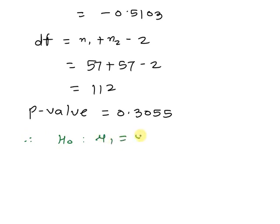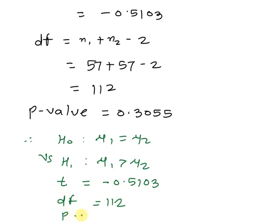Therefore we have the null hypothesis H0: μ1 equals μ2 against the alternative hypothesis H1: μ1 is greater than μ2. Then test statistic t equals minus 0.5103, degrees of freedom equals 112, and corresponding p-value equals 0.3055.